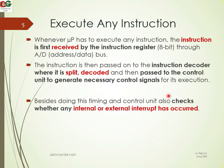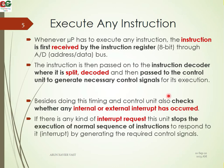Whenever the microprocessor has to execute any instruction, that instruction is first received by the Instruction Register — an 8-bit register — through the data bus. All instructions are received by the instruction register. The instruction is then passed to the Instruction Decoder, where it is split and decoded, and then passed to the Control Unit to generate the necessary control signals for its execution.